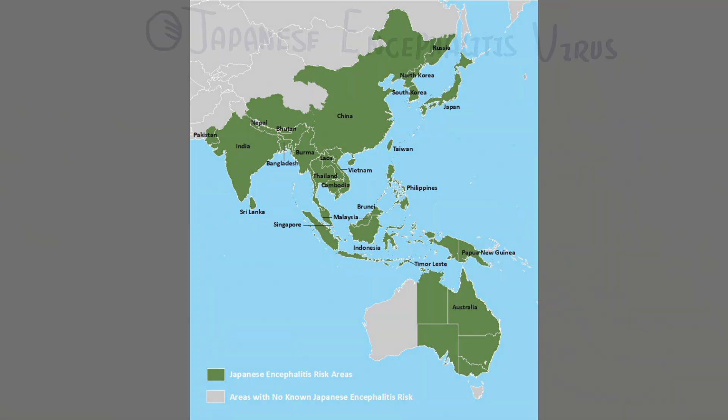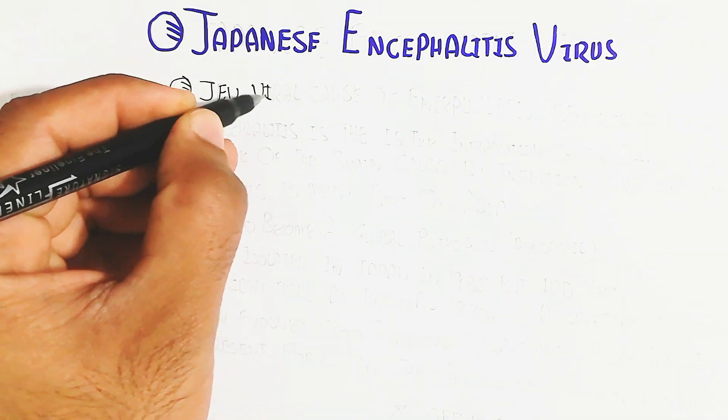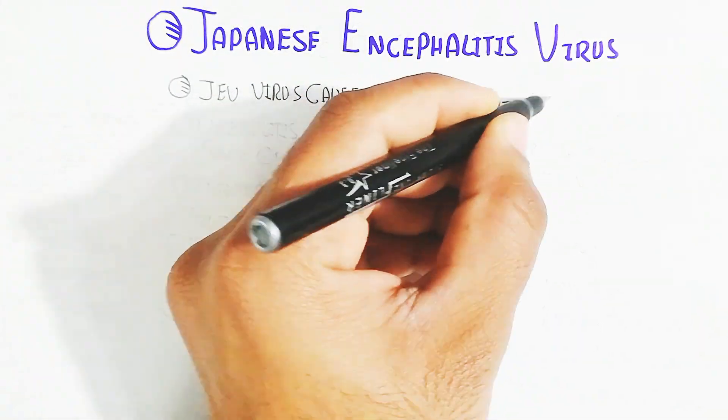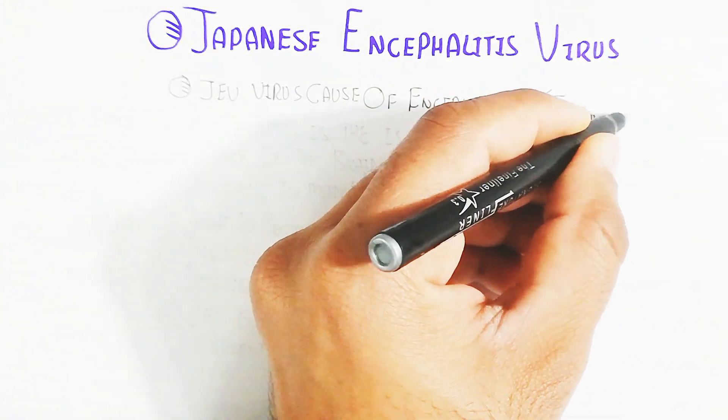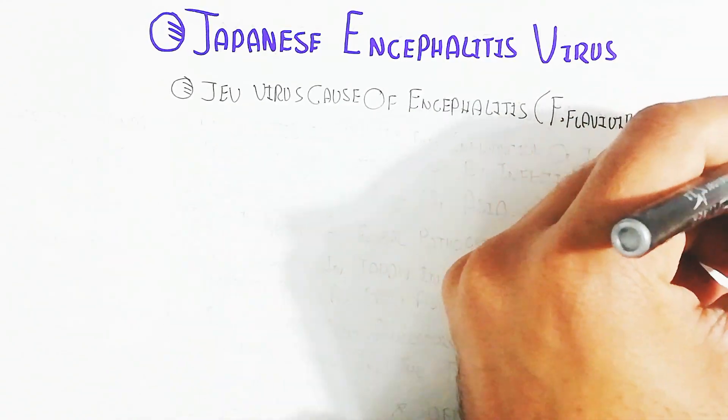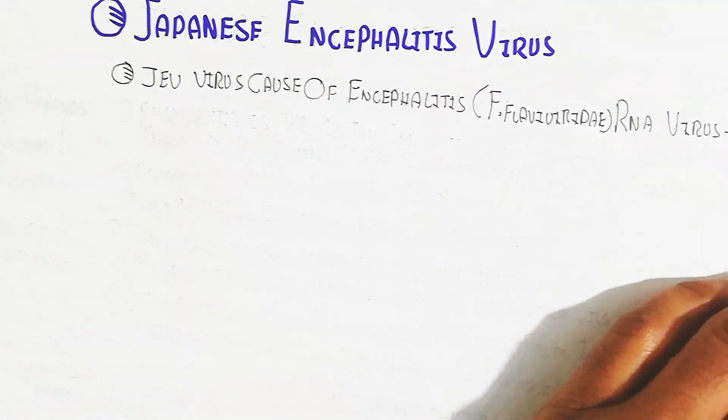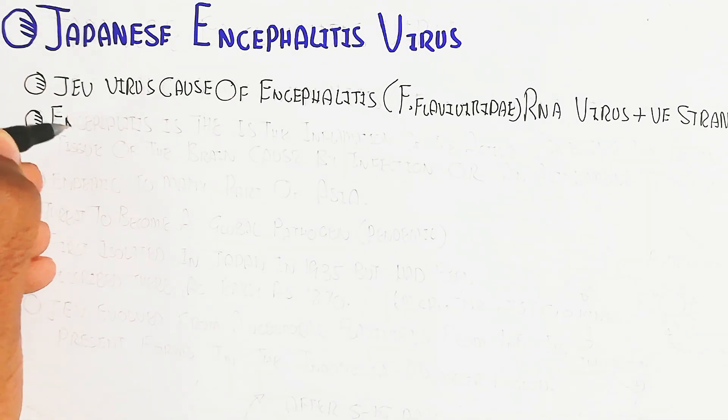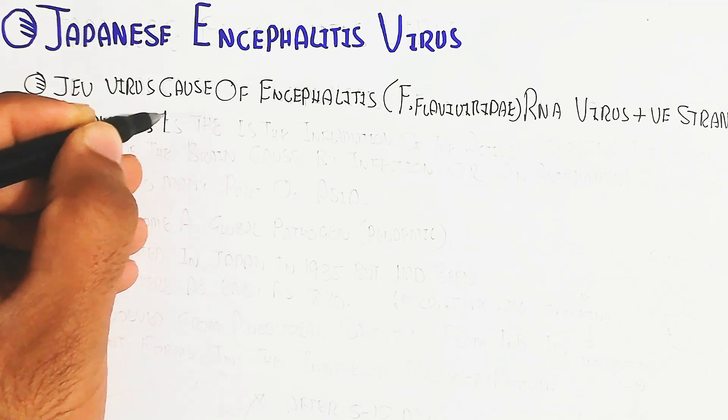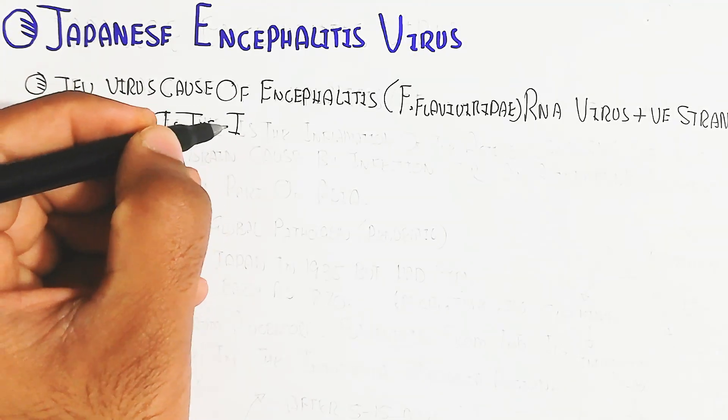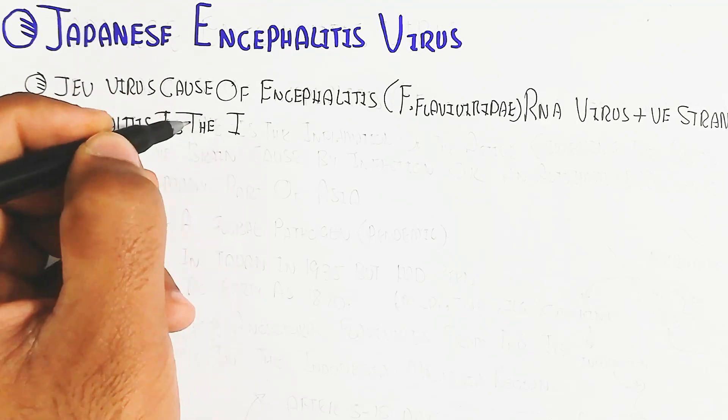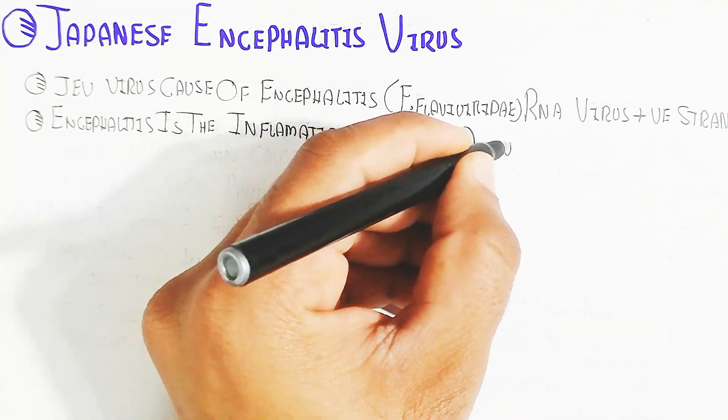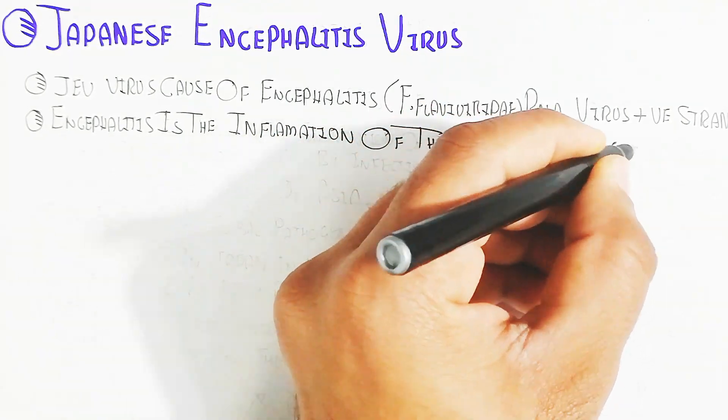JEV causes encephalitis and belongs to the family Flaviviridae. It is an RNA virus with a positive strand. Remember, the family Flaviviridae is an RNA-containing virus. The virus is non-living in the outer environment but shows living activity inside an organism as a host.